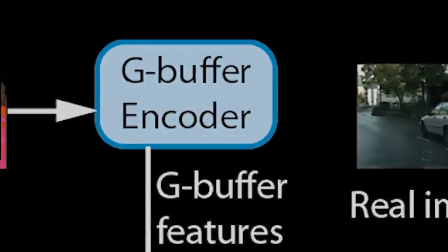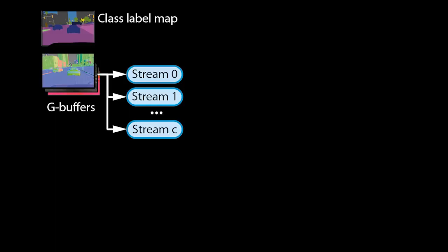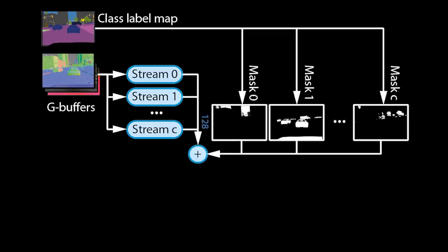Let us now zoom in on the G-buffer encoder. From the G-buffers, we can derive a semantic class label map, which assigns an object ID to every pixel. We pass the G-buffers through multiple convolutional network streams and fuse the streams again based on the object IDs. This allows the encoder to learn different ways of processing for each type of object — for example, trees will be treated differently from cars.